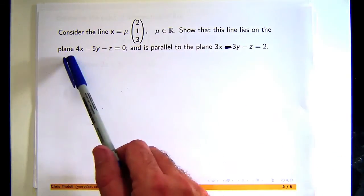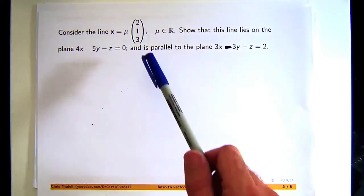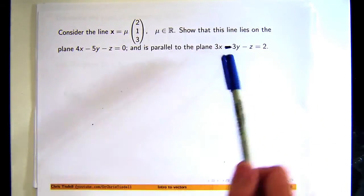We're asked to show that this line lies on this particular plane and is parallel to this particular plane, where this is a minus sign.